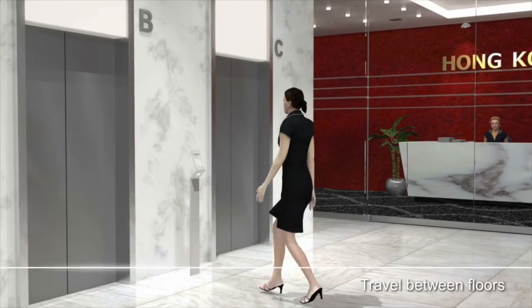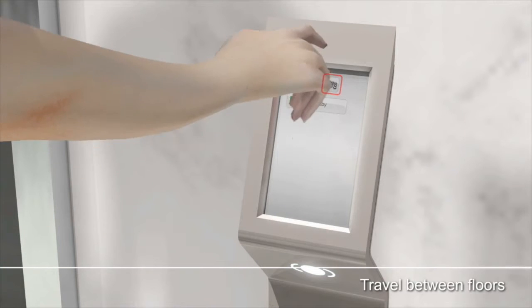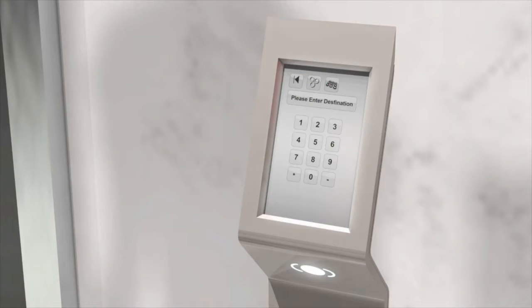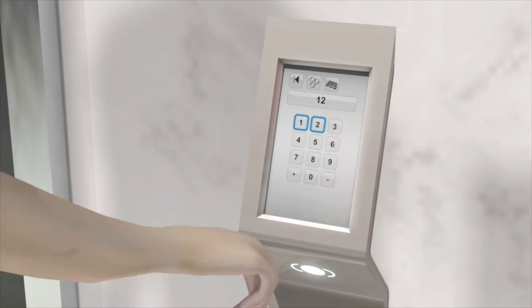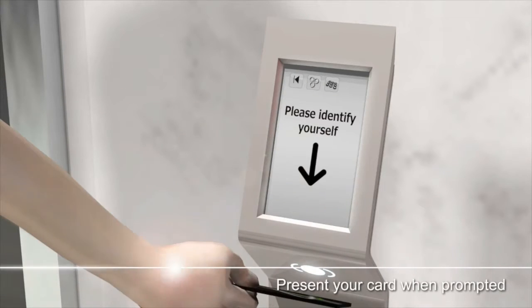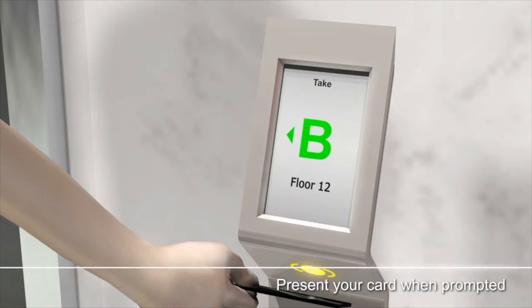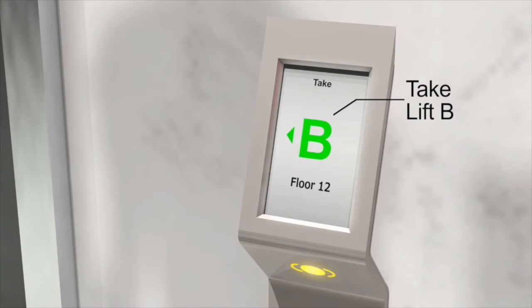If you wish to go to any other office floor within the building, press the keypad button on the port terminal. Enter the floor you wish to travel by using the keypad and present your card when prompted. A lift will be assigned to you.